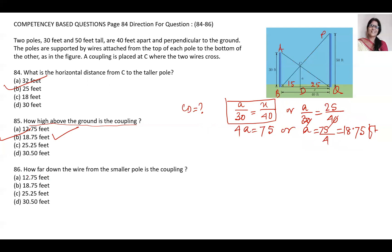The last question: how far down the wire from the smaller pole is the coupling? This question is about AC. How to find AC?